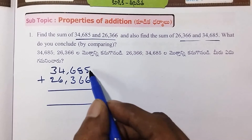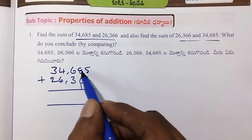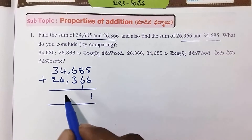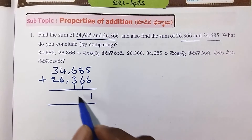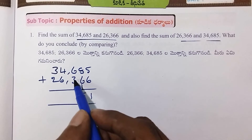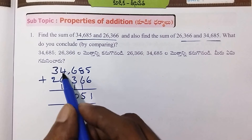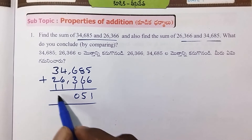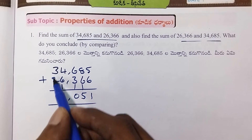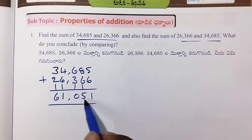So, 5 plus 6 is 11. 6 plus 1 is 7. 7 plus 8 is 15. 6 plus 3 plus 1 is 10. 6 plus 4 is 10, plus 1 is 11. 3 plus 2 is 5, plus 1 is 6. The answer is 61,051.